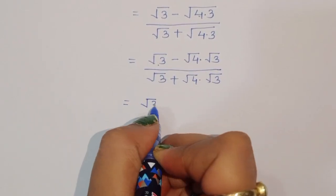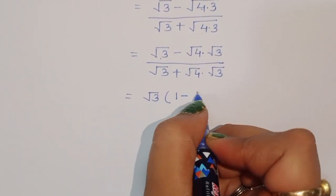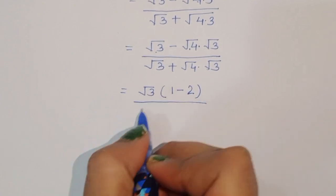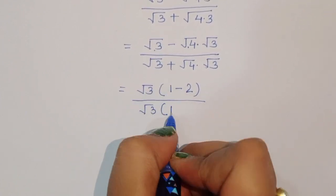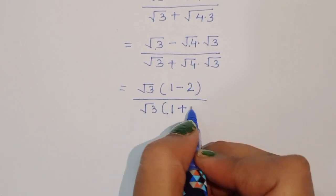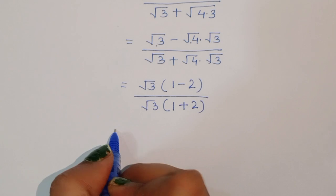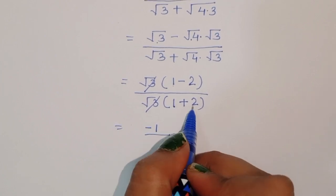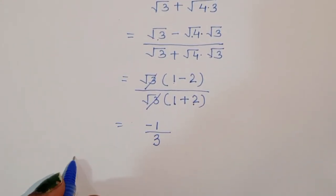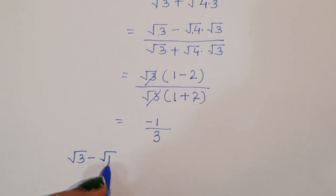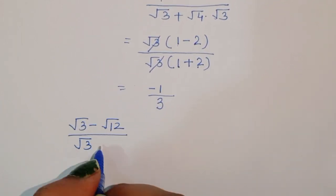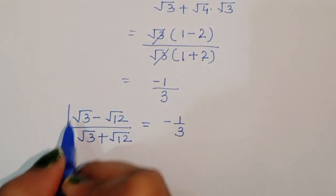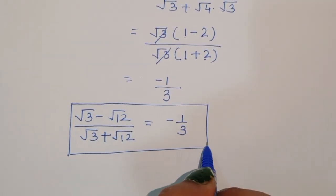Now we take square root of 3 common from numerator and denominator. Square root of 4 is 2, so numerator becomes 1 minus 2 and denominator becomes 1 plus 2. The square root of 3 cancels, giving us negative 1 divided by 3. So the answer by the first method is minus 1 by 3.